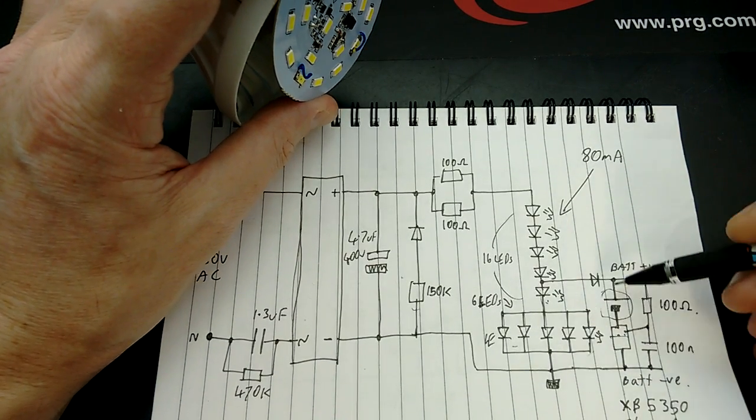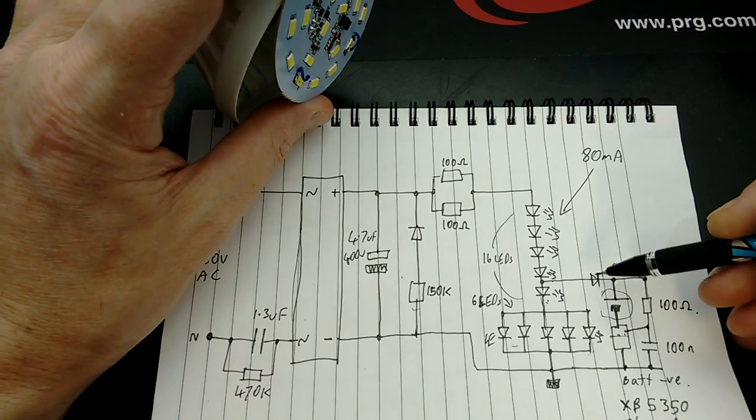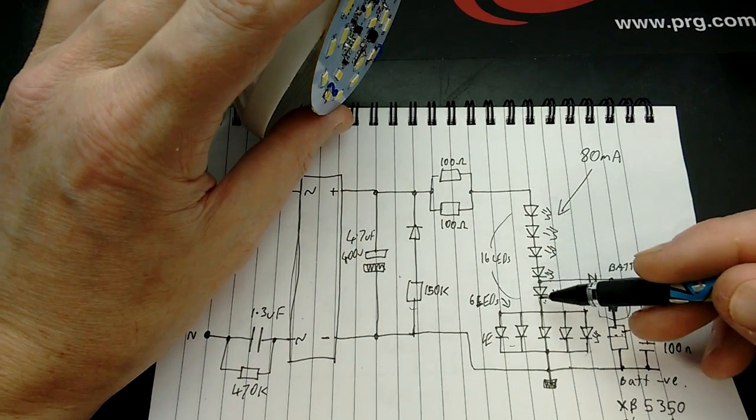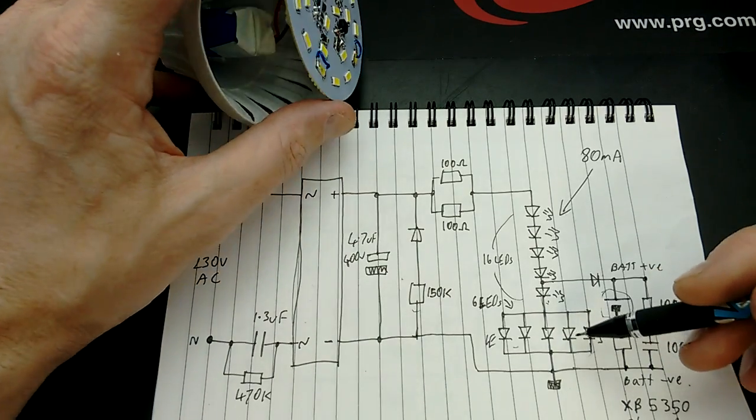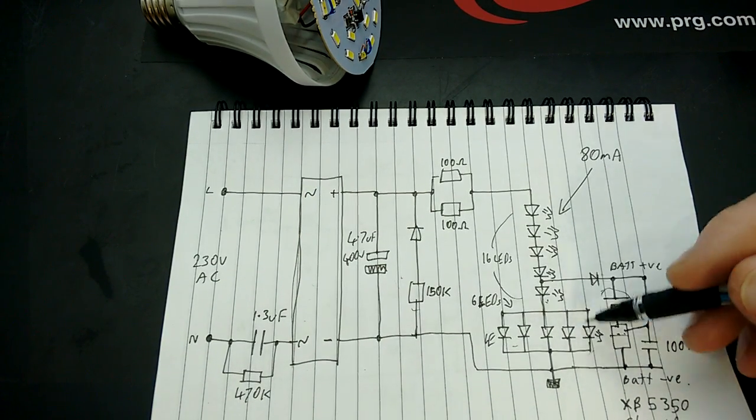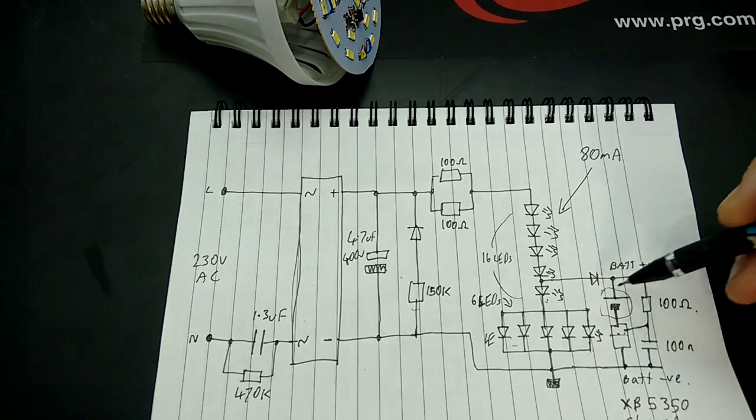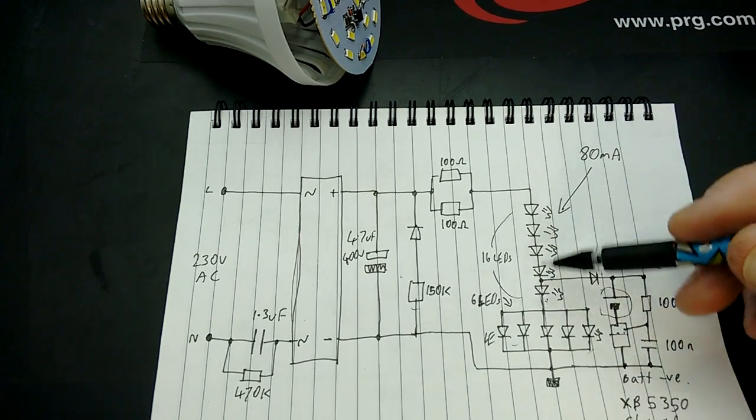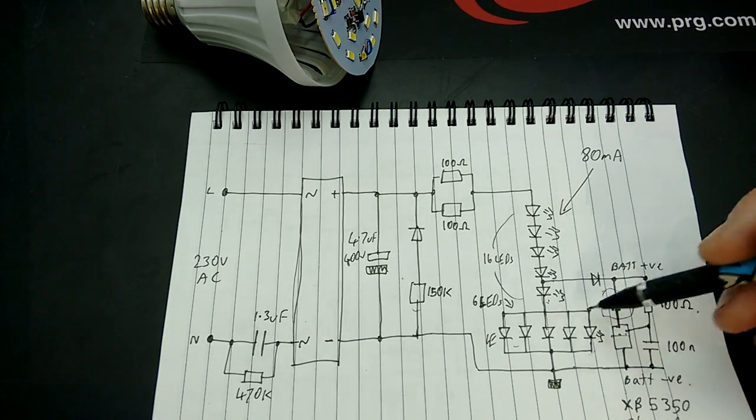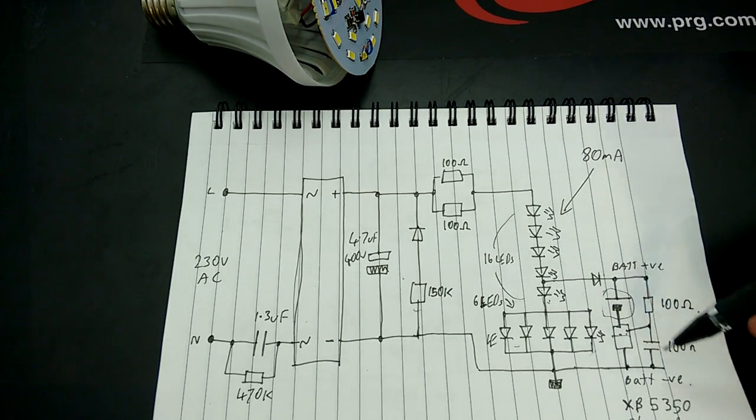So these LEDs don't light, but supposedly when, actually I unplugged the battery just to see what would happen. And when you unplug the battery, they all light up. But the other LEDs only light up once the battery is fully charged.